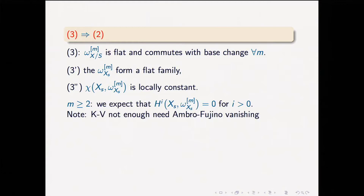In the smooth case, that comes out of Kodaira's vanishing theorem because 2 times the canonical class is the canonical class plus the canonical class, and we are assuming that the canonical class is nef. Now we have some issues here — it's a harder vanishing theorem; the Kawamata-Viehweg is not enough, something stronger is needed, but it's okay. So for m at least 2, the Euler characteristics are locally constant and there are no higher cohomologies.